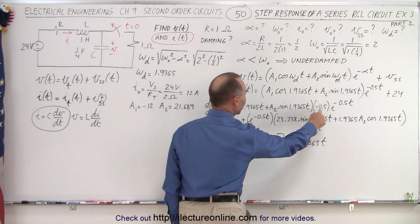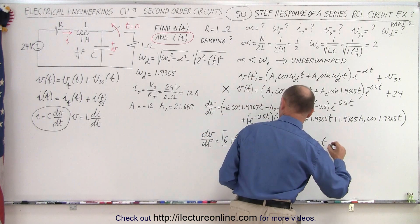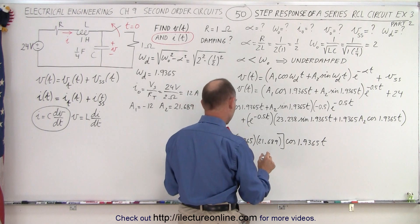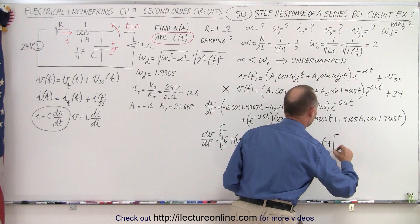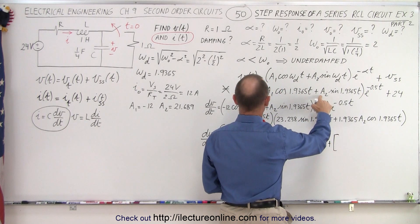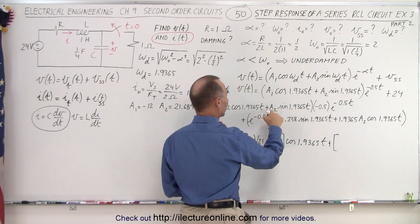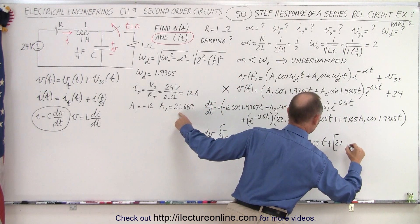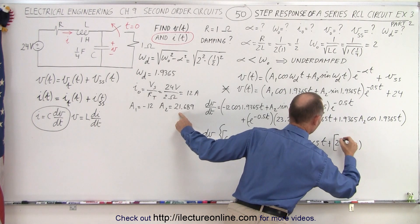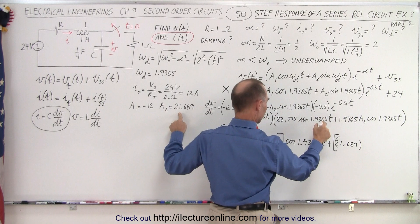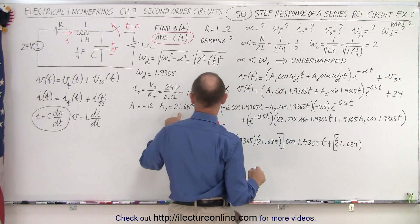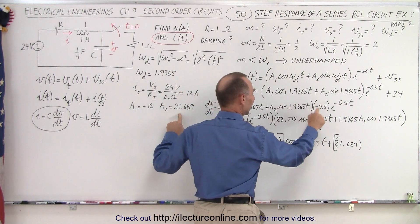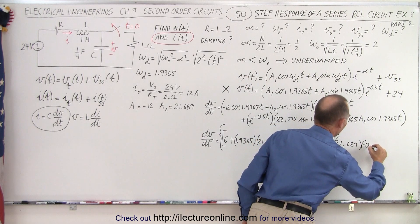Now we need to get the sine portion of that, so we have A2 times the negative 0.5. So we have plus A2, negative 0.5 times A2, which is 21.689. It's easy to get confused here, so I have to be careful. So we have A2 times the negative 0.5, so that's negative 0.5.